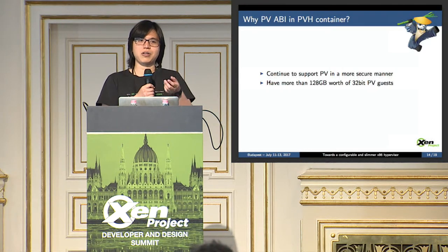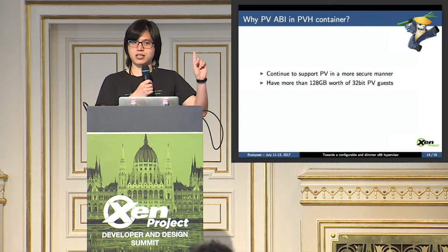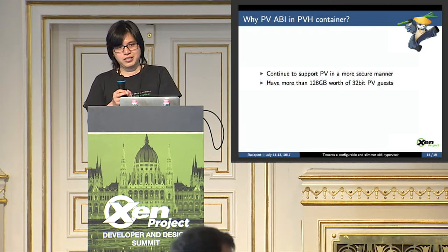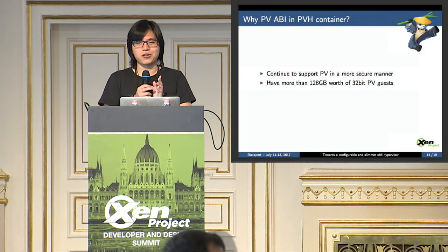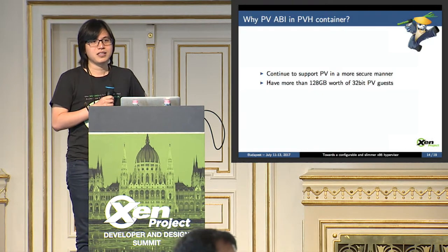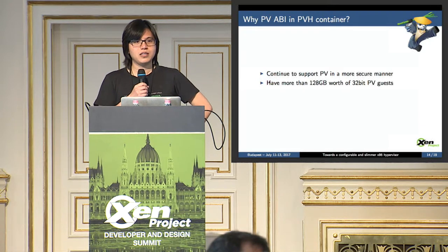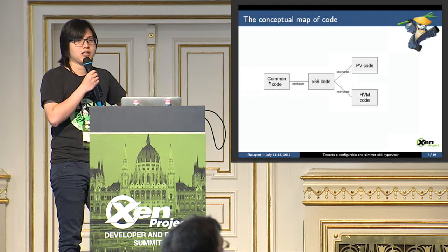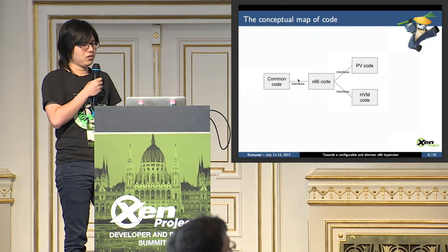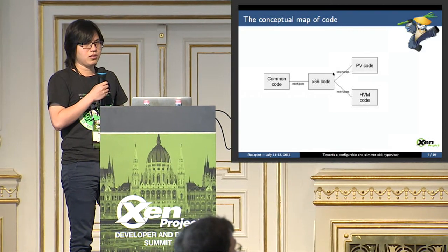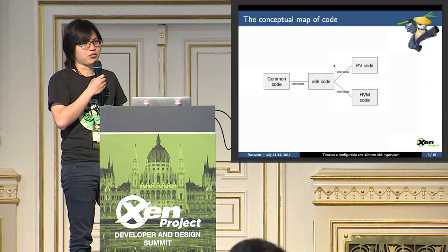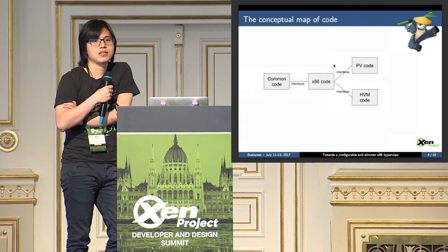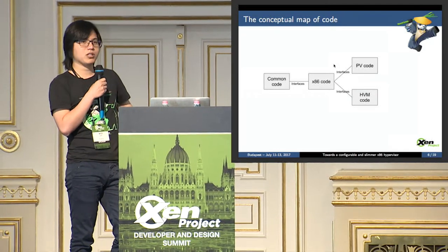The plan now is to have only two kconfig options: CONFIG_PV and CONFIG_HVM. Xen doesn't really distinguish HVM and PVH internally — the distinction is mostly made for the convenience of end users. So if you configure just HVM, you get PVH as well, and you can support PV through the PVH container. That's what the second project is about — moving PV support into a PVH container so we can have an even smaller Xen that can still support existing PV guests.